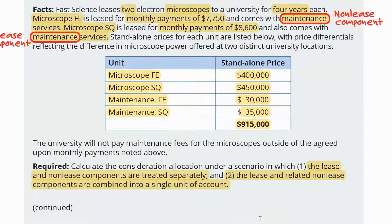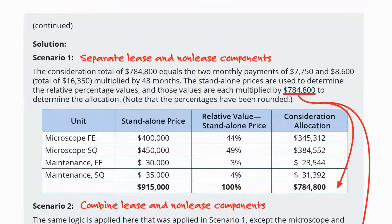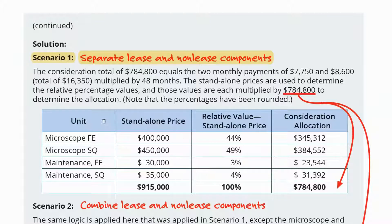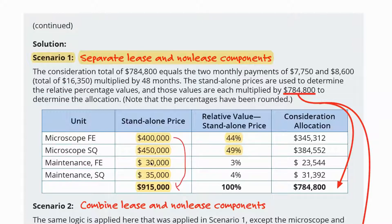Starting with option one — separate lease and non-lease components — we have four components: the lease of microscope FE, that of microscope SQ, the maintenance of FE, and the maintenance of SQ. We calculate the portion of each standalone price out of the total standalone price of $915,000. Dividing $400,000 by $915,000 gives about 44%; $450,000 by $915,000 gives 49%; $30,000 by $915,000 gives 3%; and $35,000 by $915,000 gives 4%.